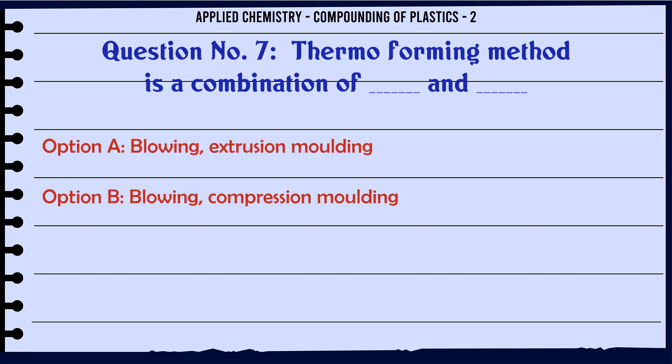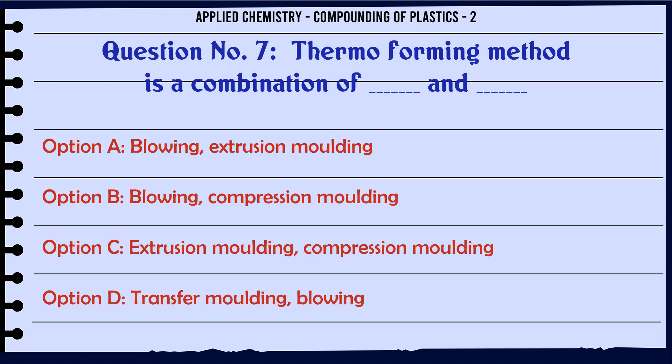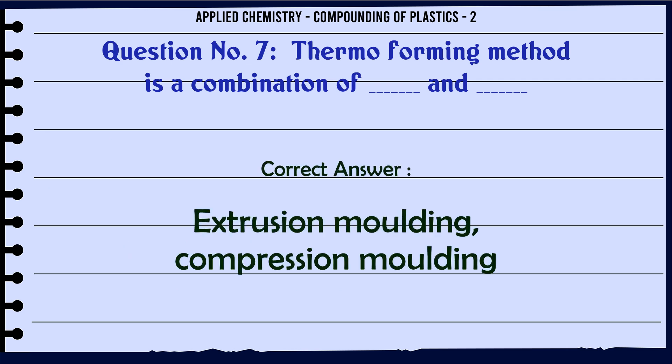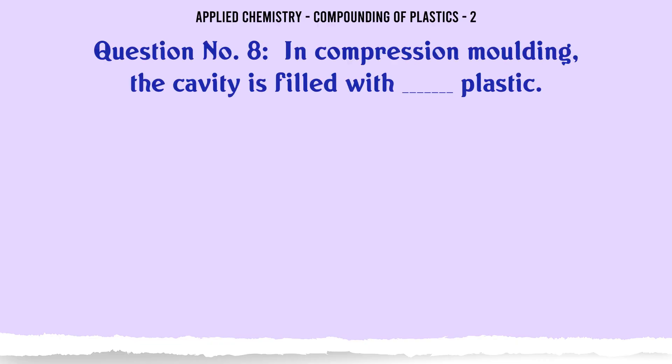Thermon forming method is a combination of A. Blowing extrusion molding, B. Blowing compression molding, C. Extrusion molding compression molding, D. Transfer molding blowing. The correct answer is Extrusion molding compression molding. In compression molding the cavity is filled with plastic